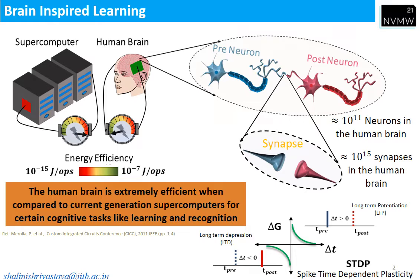If the pre-neuron is spiked before the post-neuron, it is called LTP and the conductance change is positive. If the post-neuron is spiked before the pre-neuron, it is called LTD and the conductance change is negative. Together, this is called STDP — spike time dependent plasticity.